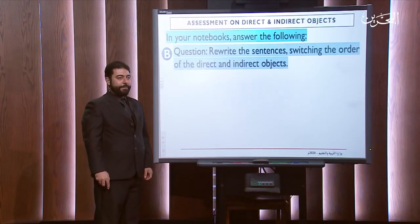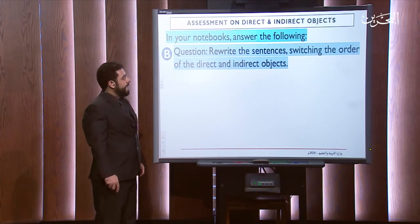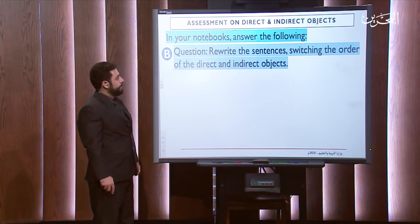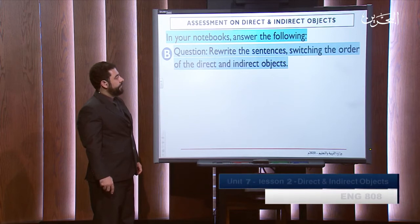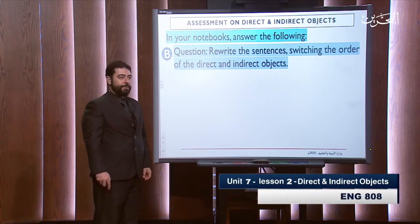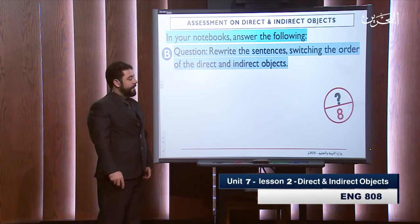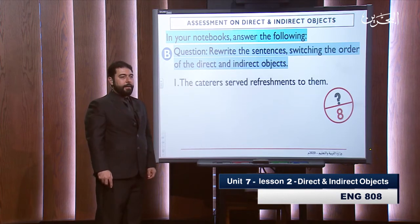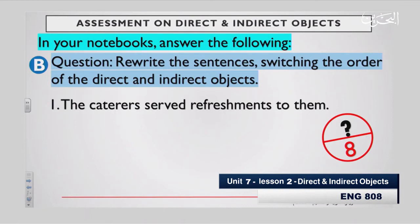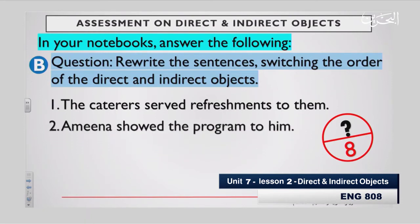That's number four. In your notebooks, answer the following — B. Question: Rewrite the sentences switching the order of the direct and indirect objects. They have a mark of eight. Number one: The caterers served refreshments to them. Two: Amina showed the program to him.